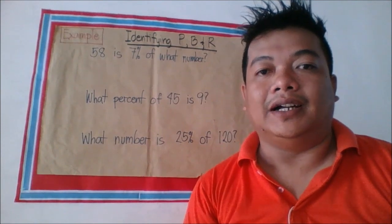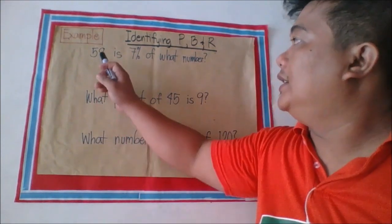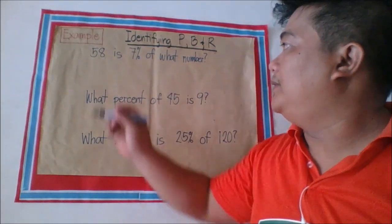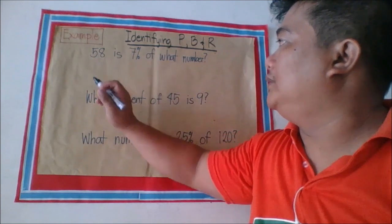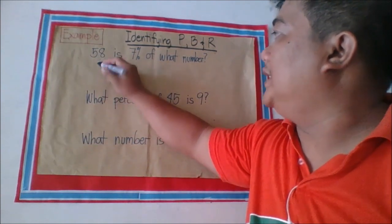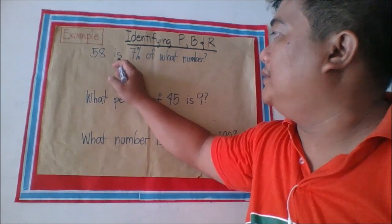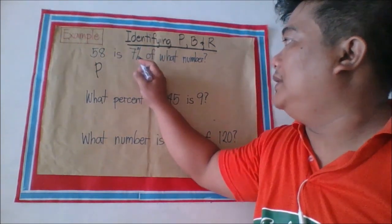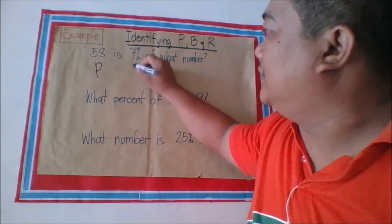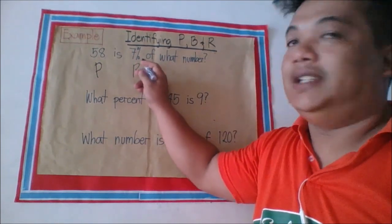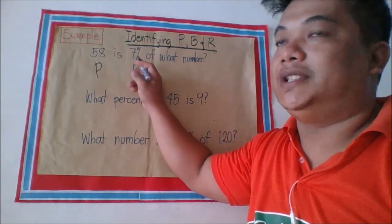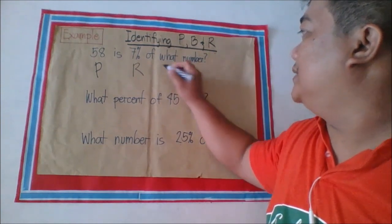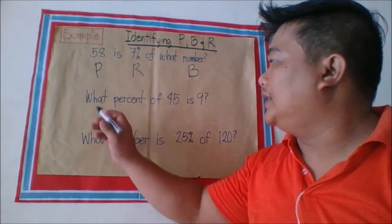Identifying the percentage, base, and rate. Example: 58 is 7% of what number? Here, 58 is the percentage because it is followed by the word 'is.' 7% is the rate because 7 is accompanied with the percent symbol. And 'what number' is considered the base because of the word 'of.'